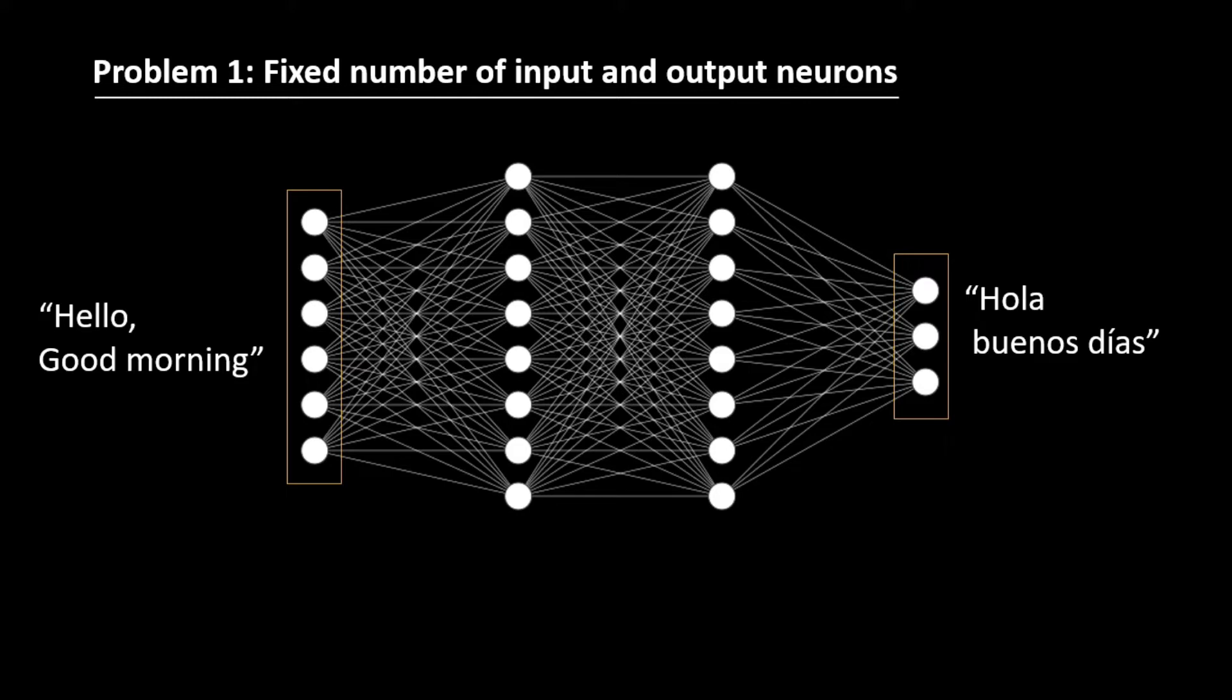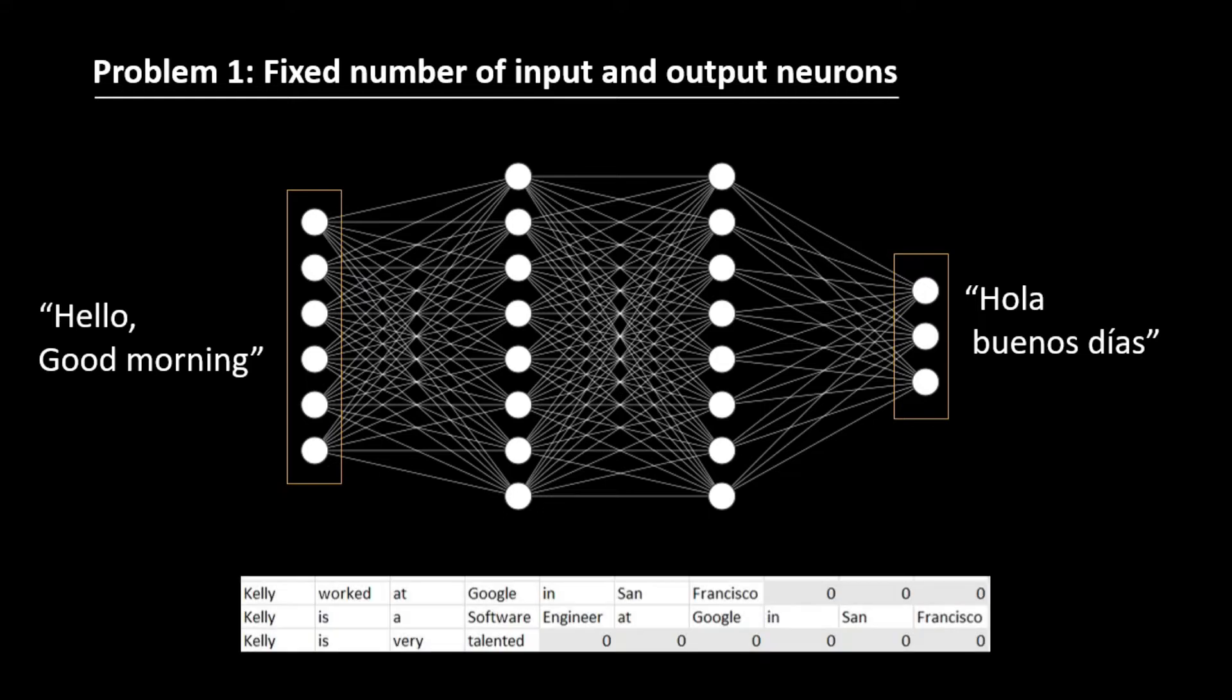Now, here you might say that, hey Jay, I have a solution to this. Why do not we convert all the sentence into fixed length sentences by padding them with zeros? And I might say that this might work, but there is another problem with this.